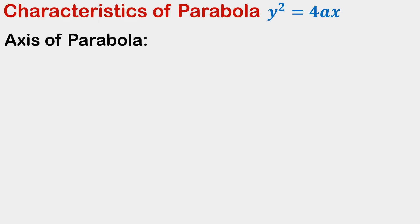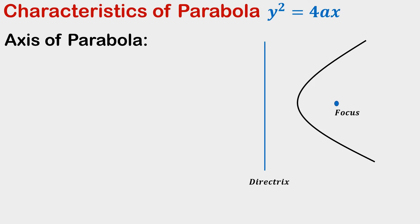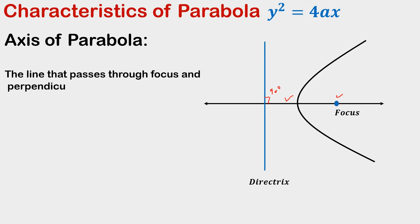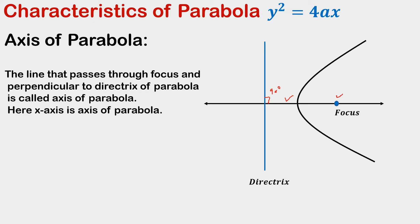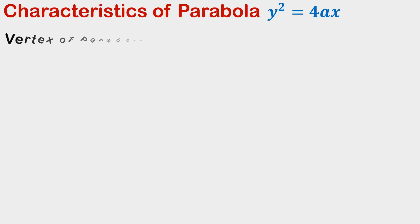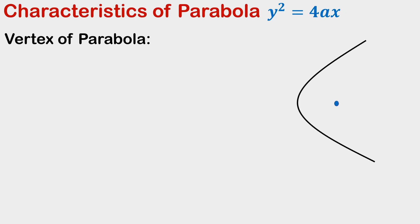For the axis of a parabola, we take the parabola, its focus, and its directrix, and draw a line that passes through the focus and is perpendicular to the directrix. This line is called the axis of the parabola. For the standard parabola, the x-axis is the axis of the parabola.